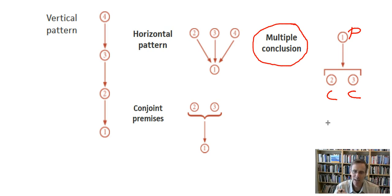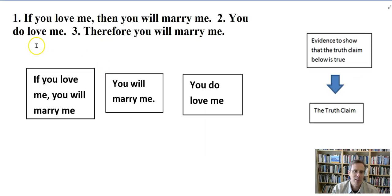Obviously, they can be built on top of each other with any level of complexity. And that's one of the things that I want to show you here is the process of working through and asking yourself the kinds of questions that you need to figure out more complex argumentative structures. Here's an example of an argument someone might make. If you love me, then you will marry me. You do love me, therefore you will marry me.